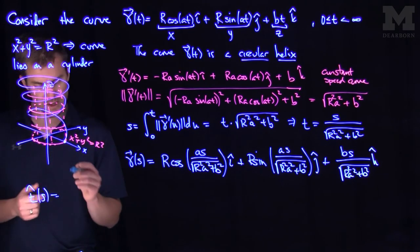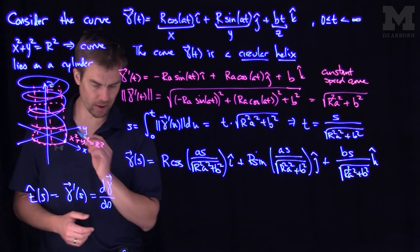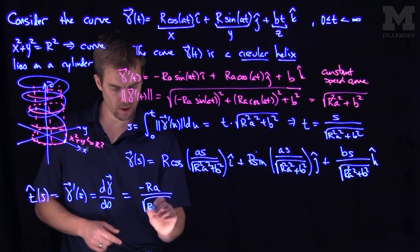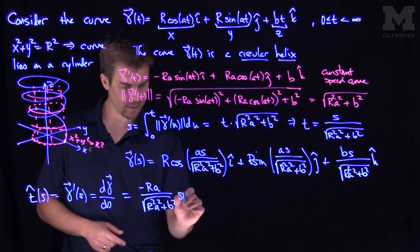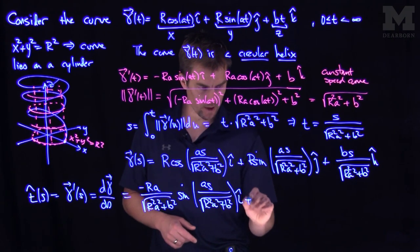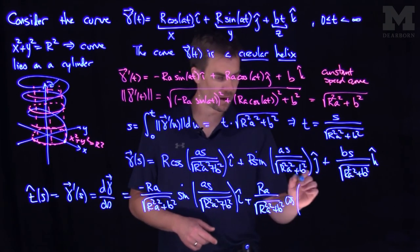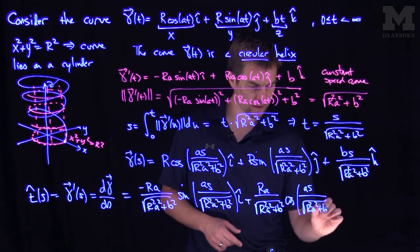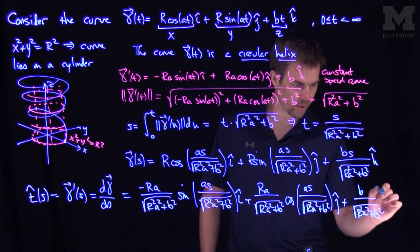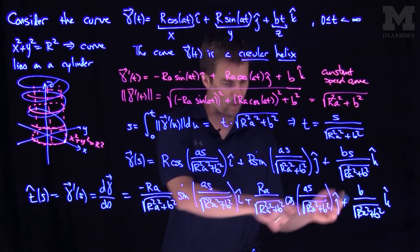Taking d/ds of gamma, the unit tangent vector T̂(s) is: negative ra/sqrt(r²a²+b²) times sine(as/sqrt(r²a²+b²)) î, plus ra/sqrt(r²a²+b²) times cosine(as/sqrt(r²a²+b²)) ĵ, plus b/sqrt(r²a²+b²) k̂. We can verify this is a unit vector by squaring each component and summing to get 1.